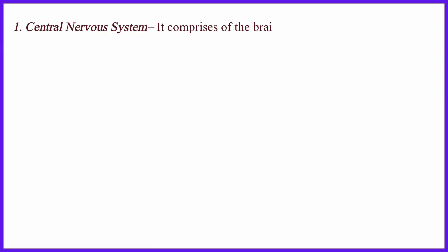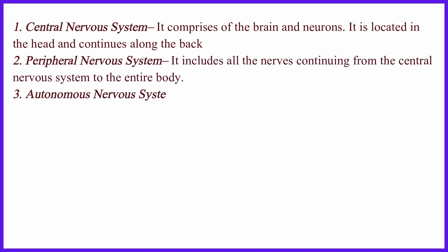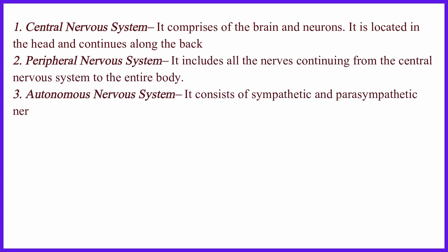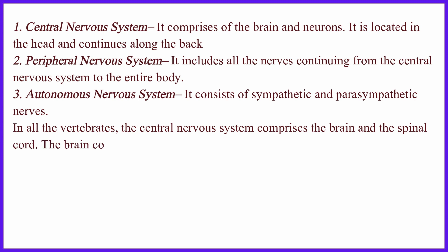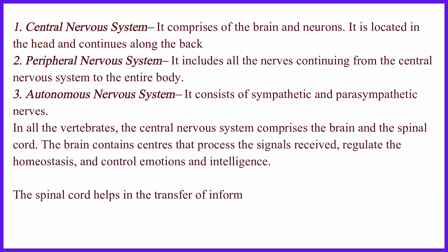The central nervous system comprises the brain and neurons, and is located in the head continuing along the back. The peripheral nervous system includes all the nerves extending from the central nervous system to the entire body. The autonomous nervous system consists of sympathetic and parasympathetic nerves.